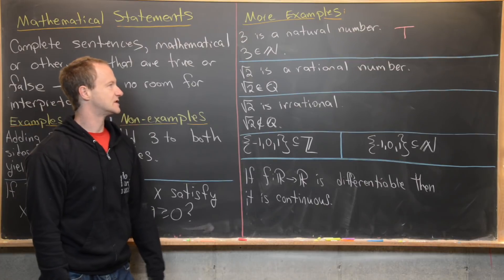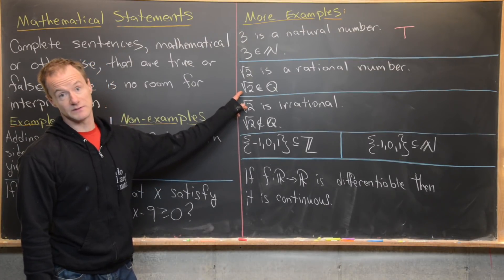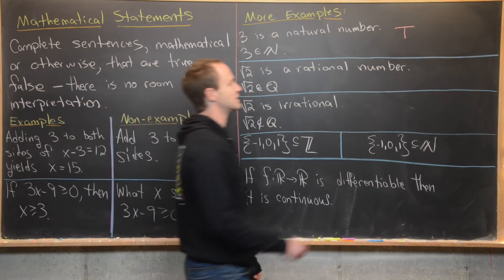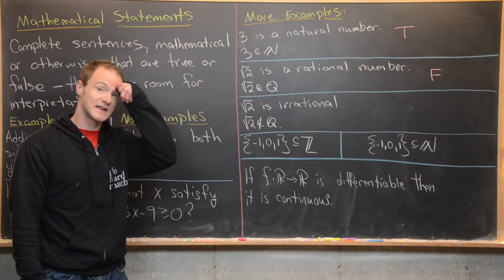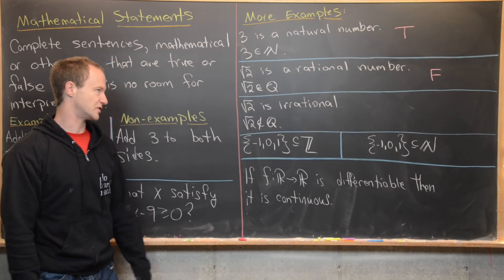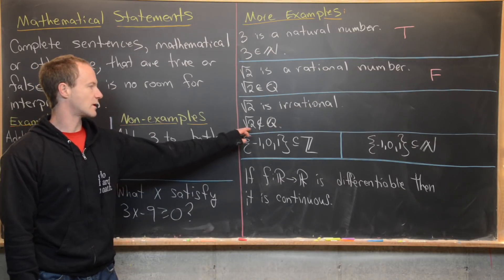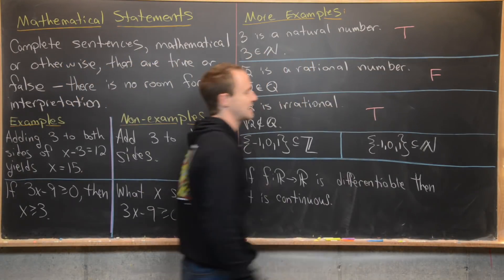Here's the next one. The square root of two is a rational number, or in symbols, the square root of two is an element of the rationals. That's clearly a false mathematical statement, but it's still a mathematical statement because there's nothing open to interpretation there. Next we have root two is irrational, or the square root of two is not an element of the rationals. That's a true mathematical statement.